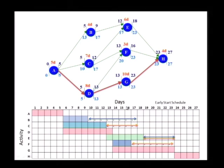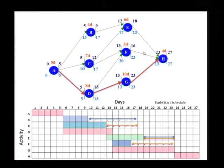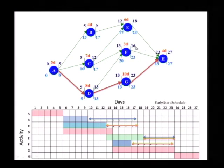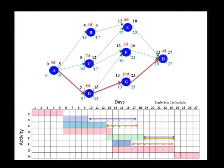Now F — total float of 7. F can move all the way to the end; it can end on 23, and it will not hamper anything else. Free float is also the same.